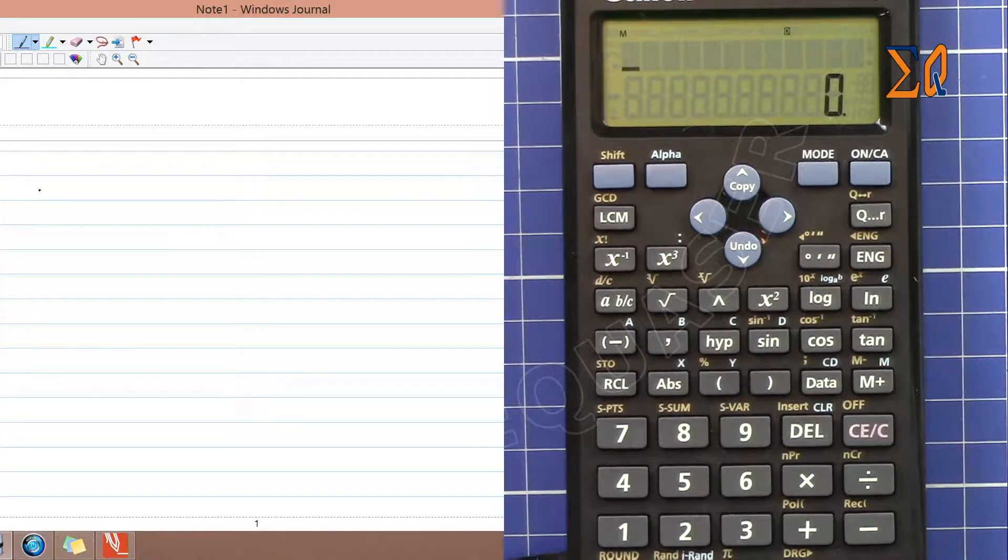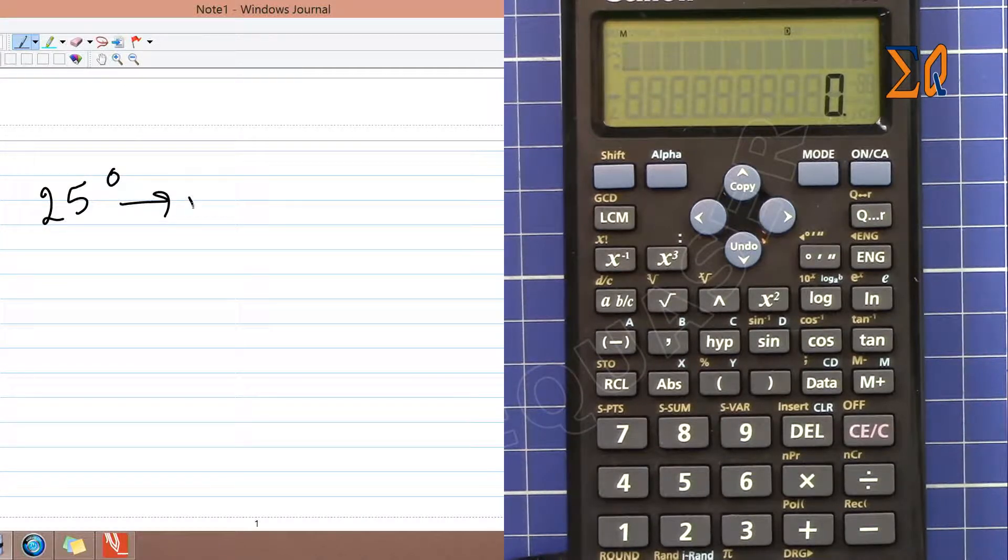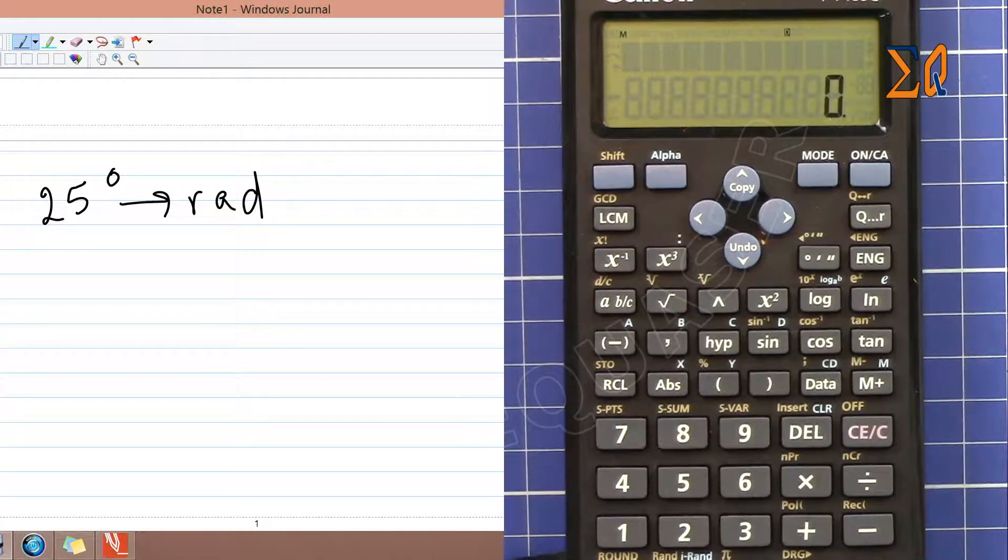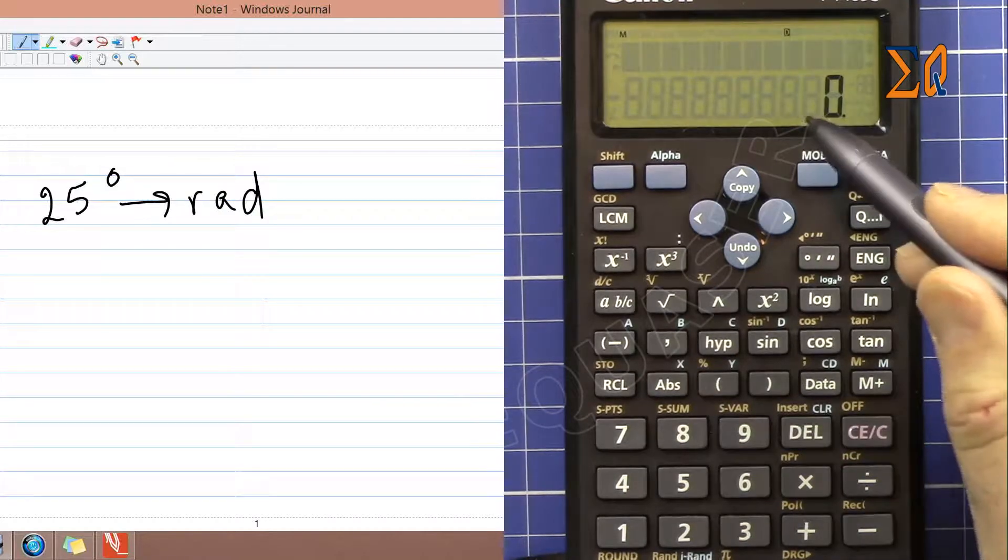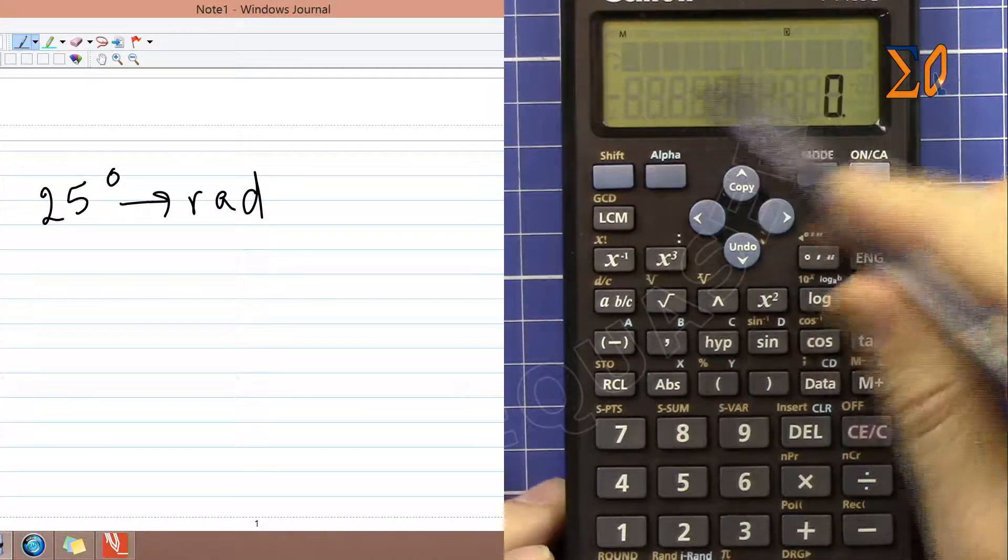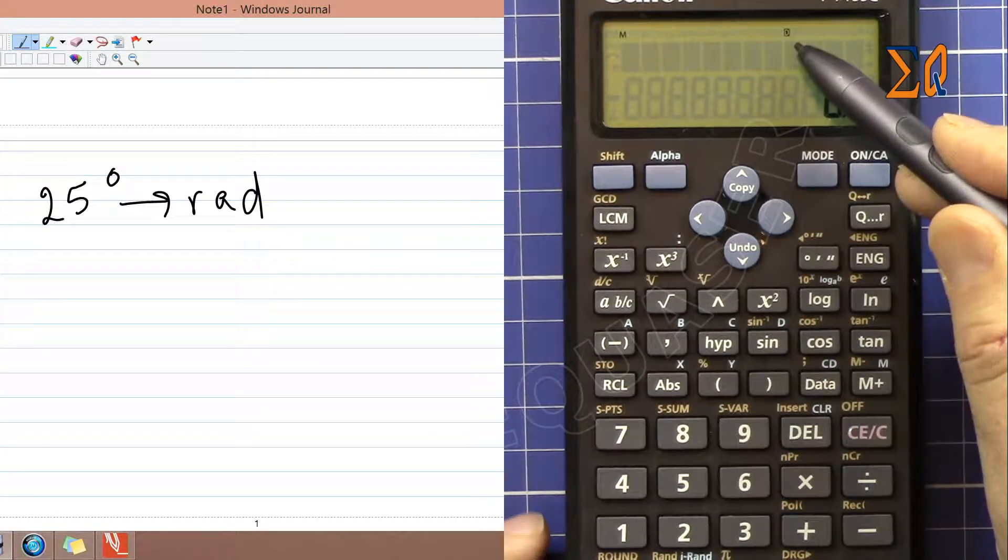Let's say you have 25 degrees and you want to convert it into radians. The value you're looking for is radian, so you must set your calculator to radian mode. My calculator is currently in degree mode, so I have to change it.